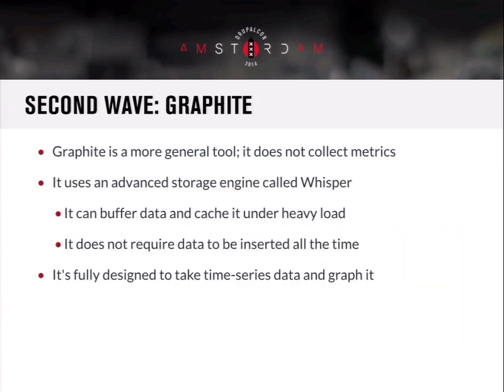Graphite is a newer tool really designed to graph and store metrics. It has an advanced storage engine called Whisper. One big thing about RRD tool is that it expects you to write something all the time. Whisper, in addition to being able to buffer and cache data under heavy write load, doesn't require you to insert to it all the time. So if you have a metric you only need to track at an irregular interval, you can do that. It's basically designed to take time series data, store it, and then graph it or serve API information about it.